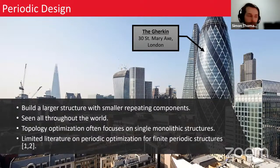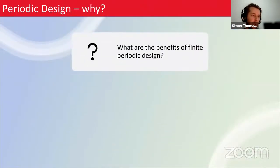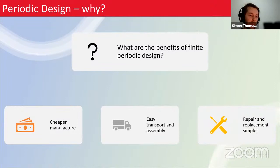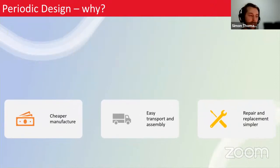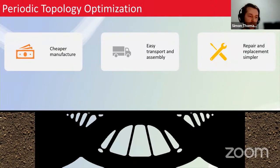Periodic design is seen throughout the world in architectural and structural design — essentially building a larger structure out of smaller repeating components. Unfortunately, there is quite limited topology optimization literature on periodic optimization for finite periodic structures. Periodic design can be cheaper to manufacture because we use smaller components, easier to transport and assemble, and the repair and replacement process becomes simpler.